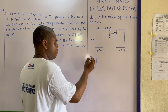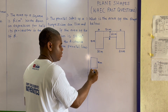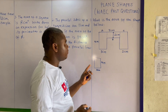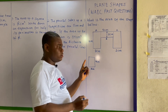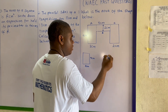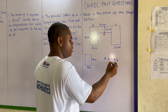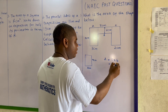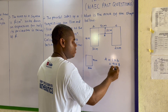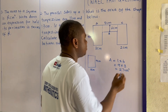For the first shape A, we have nine centimeters and three centimeters. The area of a rectangle is length times breadth, so this gives us nine times three, which equals 27 centimeters squared.